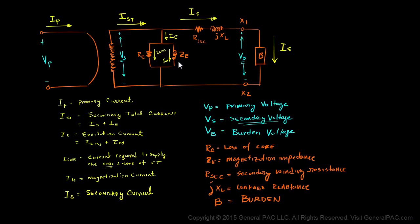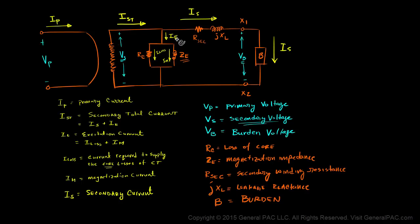The ZE value is really non-linear, which means it's going to change based off of the secondary flux. The secondary flux controls the secondary voltage, so ZE is directly proportional to the secondary voltage. During normal operating conditions, we should expect this magnetization branch to be really high — 1,000 ohms to 10,000 ohms. So during steady state conditions, the magnetization impedance should be very high, the exciting current should be very low, and the total secondary current should closely equal the secondary current. For a current transformer, the secondary current is directly proportional to the primary current based off of the CT ratio.